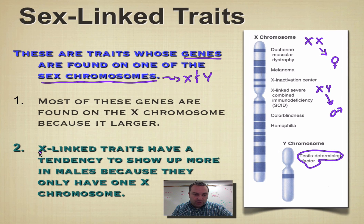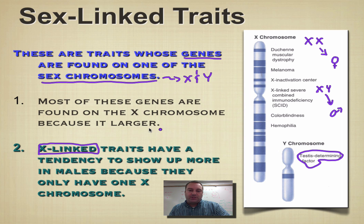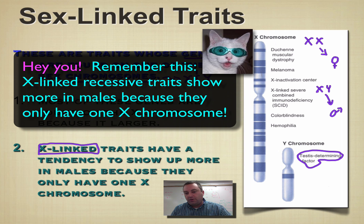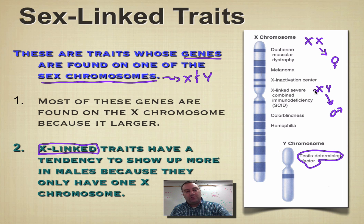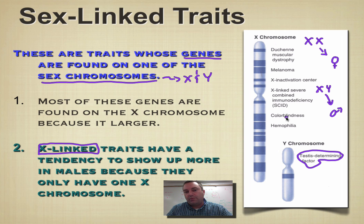Sex-linked traits are often called X-linked. I like the term X-linked better because it tells you exactly which chromosome the trait is found on. X-linked traits are going to show up in guys more often than girls, because a guy only needs one allele for it to show up. If it's a recessive trait, a girl is going to need two copies, but the guy only needs one because he only has one X chromosome.